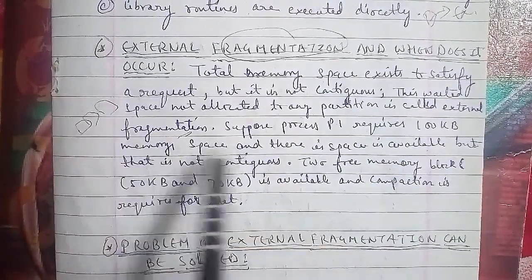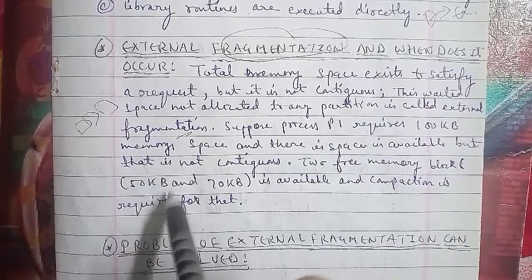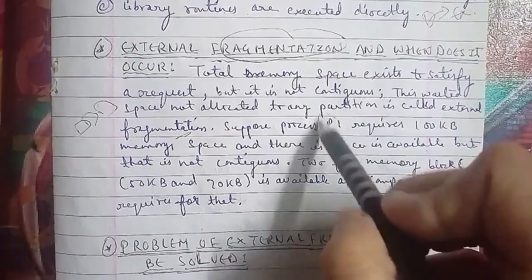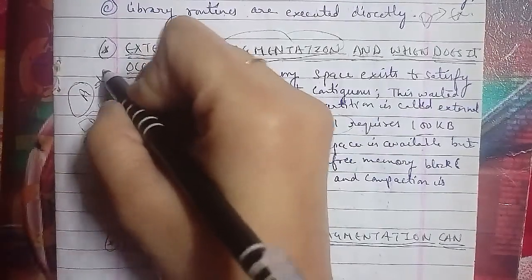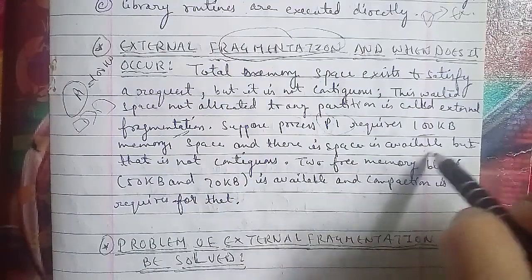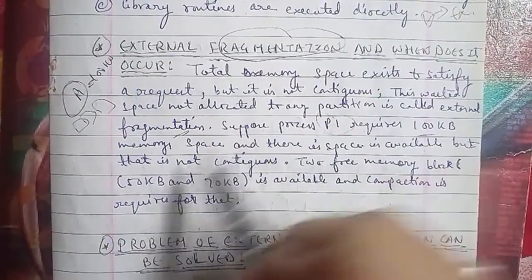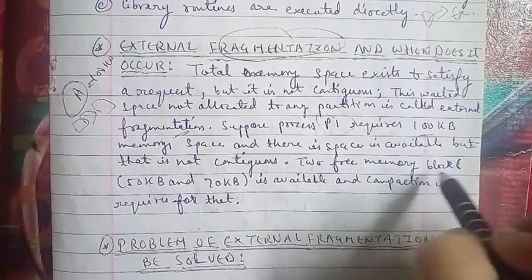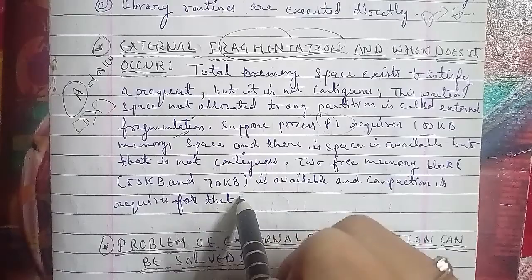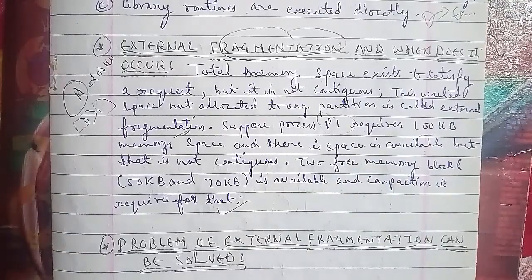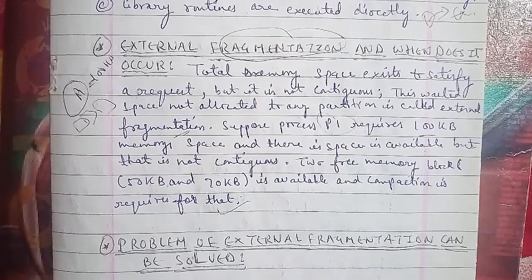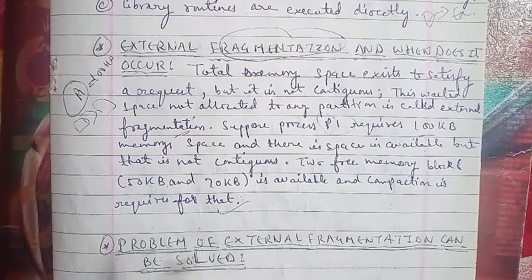For example, suppose process one requires 100KB. There is space available but it is not contiguous — two free memory blocks of 50KB and 70KB are available. The total is sufficient for the 100KB requirement. Compaction is needed to combine these blocks. After compaction, the memory can be used. The problem of external fragmentation can be solved using compaction.